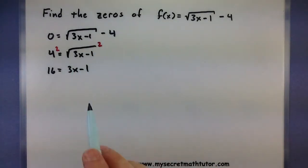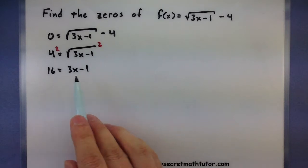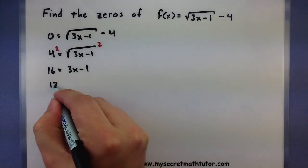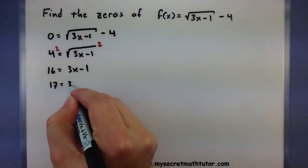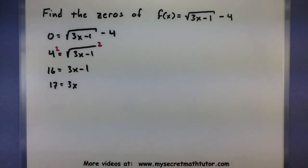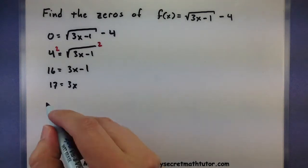A little bit closer. Let's add 1 to both sides, so that's 17. And last, divide by 3.